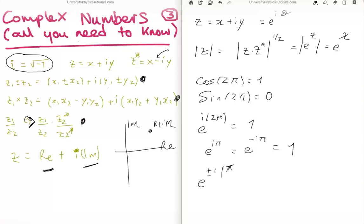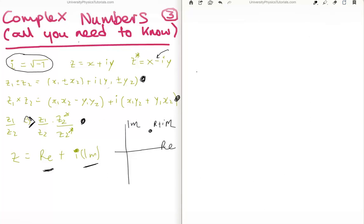OK? And finally, e to the plus or minus i pi over 2, 90 degrees, is going to be plus or minus, plus or minus i. OK? I'm just flying through these now because, to be honest, once you've seen them, they become pretty straightforward. But all of these, these are the sorts of things, if you're starting to manipulate complex numbers, you're going to need to know these.